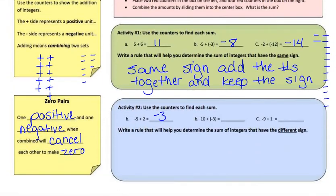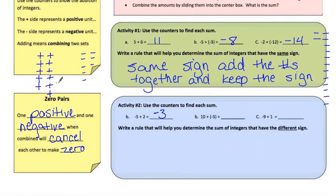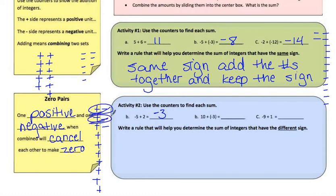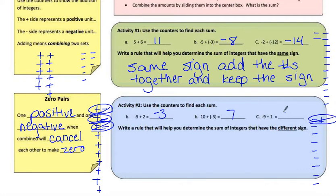If you don't want to use the mat, you can line them up like before. For positive 10 plus negative 3, draw 10 positives and 3 negatives lined up. Those 3 pairs cancel because they're opposites, and you're left with 7 positives — actually, I'm left with 7 positive. Wait — counting carefully: I get positive 7.